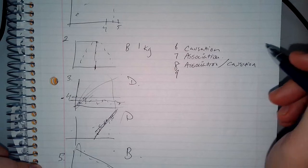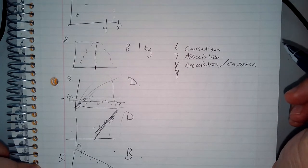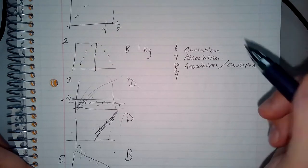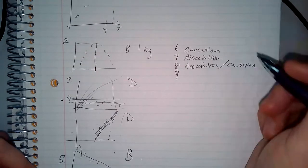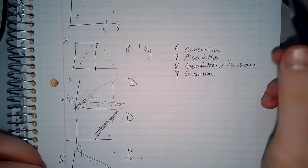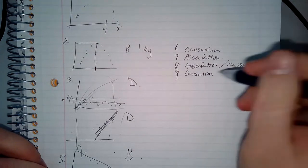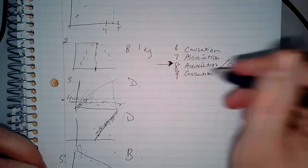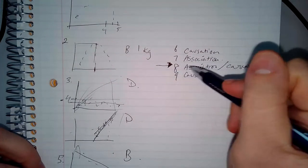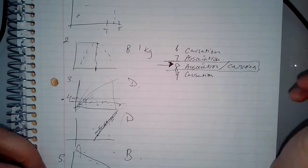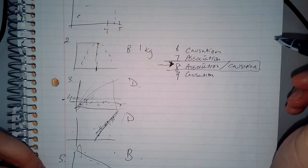Number nine: hours spent studying on an exam increasing the percentage of problems answered correctly — that one is definitely a causation. So back to number eight: that is your Google Classroom question for the day. Give me your explanation — is it an association or a causation? Give me your reasoning why. I need at least three to five sentences. Have a great day.